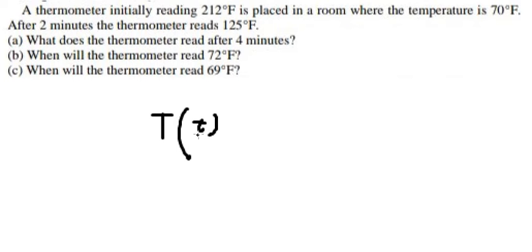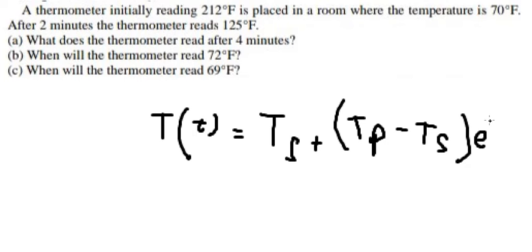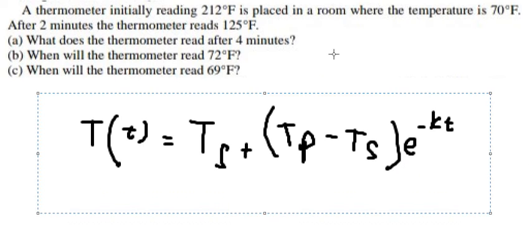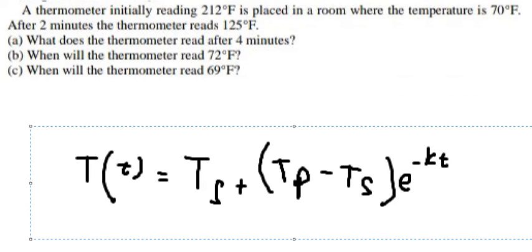That should be about capital T, and we have small t that's about the time, equal to T_H plus, inside the parenthesis, T_B minus T_H, and we have e to the power of negative kt. So this is about the formula.